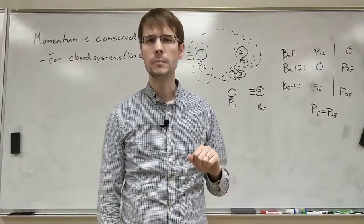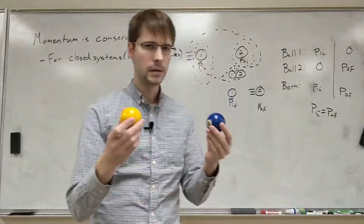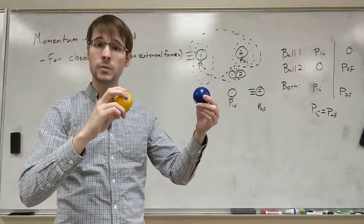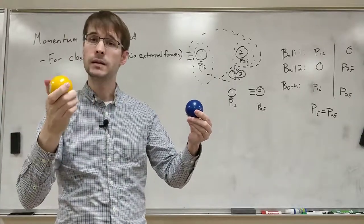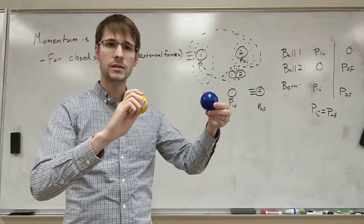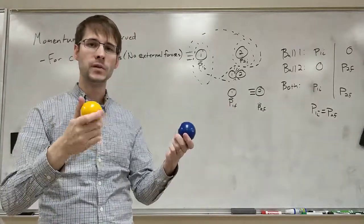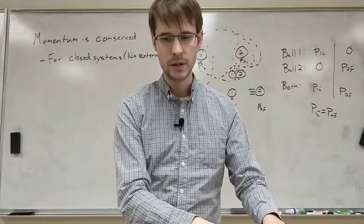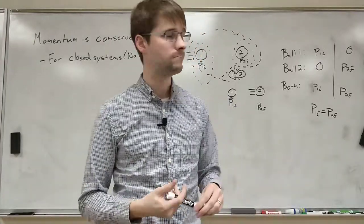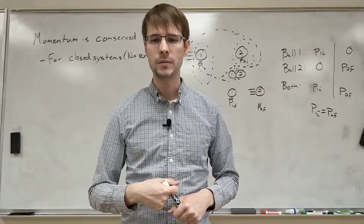If we think back to our billiard ball example, whatever force caused the first one to move would be an external force. So before that point, momentum is not conserved. But after that external force goes away, the momentum of the whole system will stay the same for the rest of time until there's some other external force acting on it. So that's the main time we can use conservation of momentum.